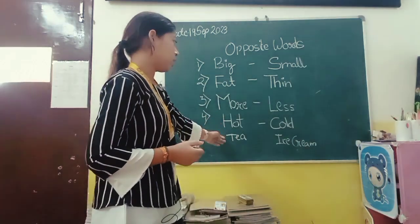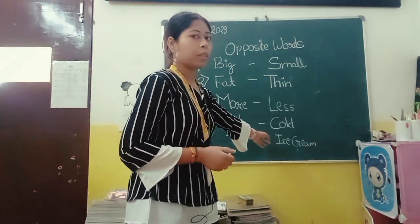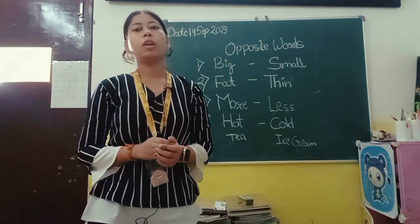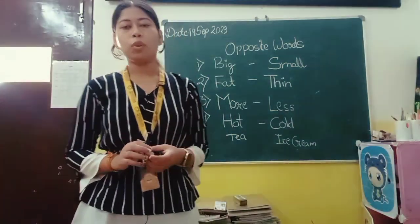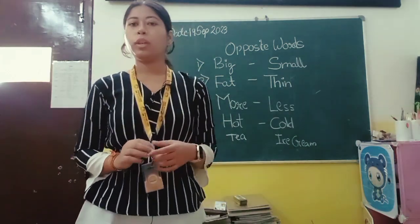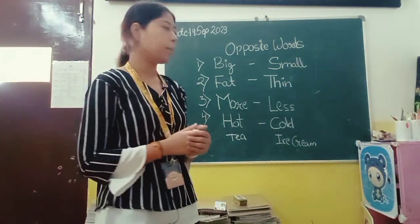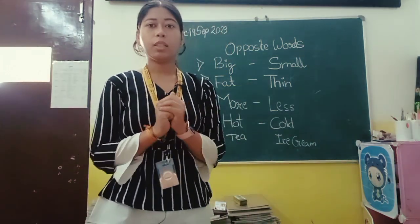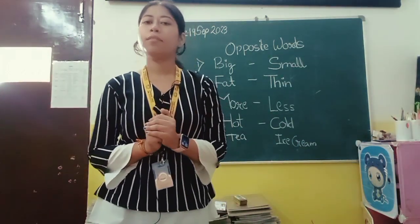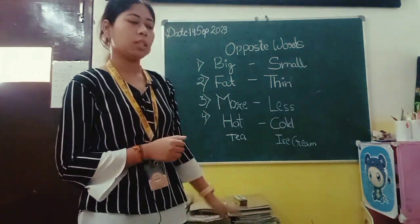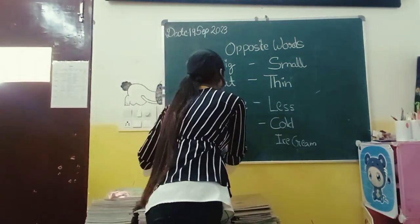Examples of hot include tea, coffee, and anything that feels hot. An example of cold is ice cream, cold drink, and anything that feels cold. We also use hot and cold for weather. Like, it is very hot today — aaj garam hai. And when we feel cold, we say it is very cold today. So we use hot and cold for weather and for objects as well. I hope you all have understood the topic of hot and cold.